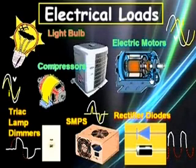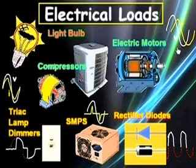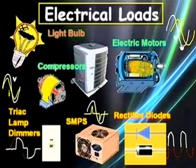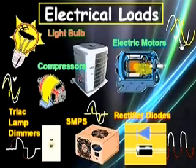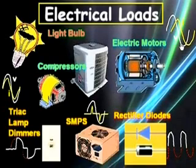A big industrial motor like this one, with its many inductive windings, causes a phase displacement between the AC current and voltage, and creates additional reactive amps needed to expand and collapse its magnetic fields. These reactive amps do not produce useful watts.